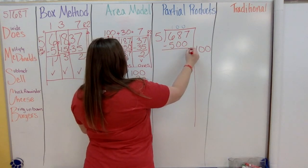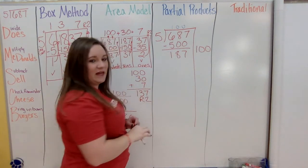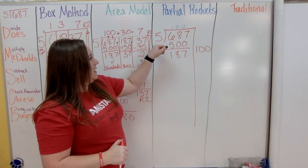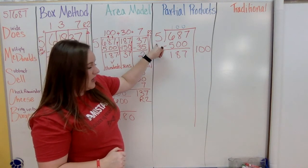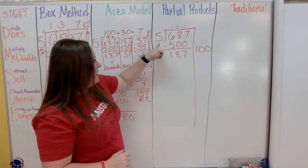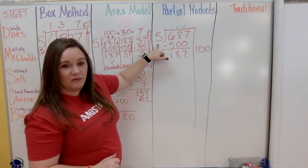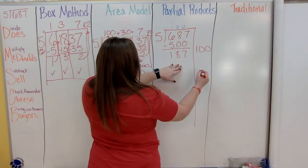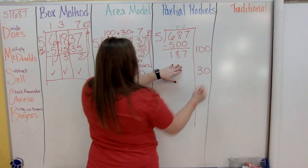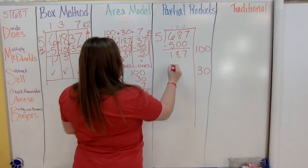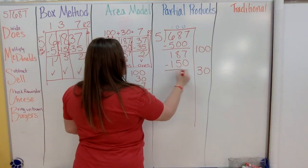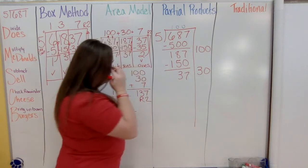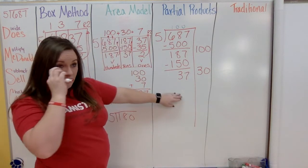Subtract: 687 minus 500 gives 187. Now focus on the tens: can I take out 50? 100? 150? 200? — 200 is too many, so I take 150, which means multiplying by 30. Five times 30 is 150. Subtract: 187 minus 150 leaves 37.